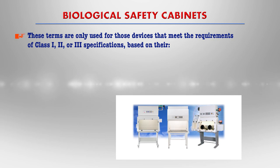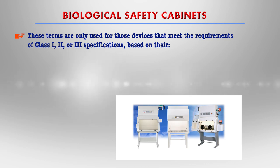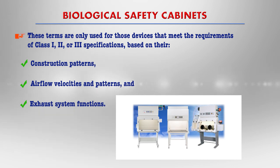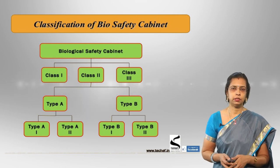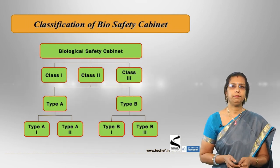These terms are only used for devices that meet the requirements of class 1, 2, or 3 specification, considering construction pattern, airflow velocities and patterns, and exhaust system functions. Depending on these three criteria, biosafety cabinets are classified as class 1, class 2, or class 3. In this flowchart, you can see biological safety cabinets classified into three types.